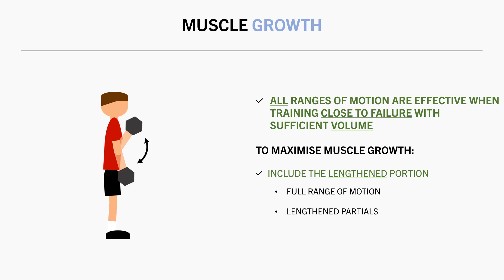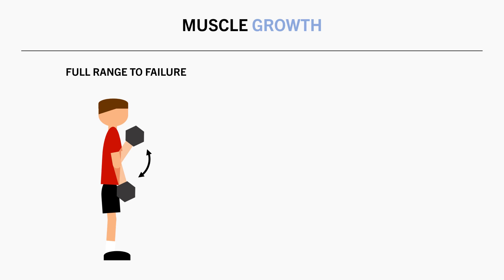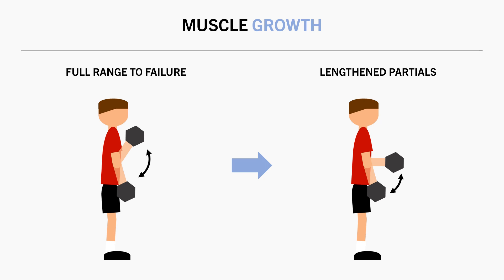You could also use lengthened partials as a strategy to extend sets in some cases. This can be achieved by performing a standard full range of motion to failure, and then performing a few extra lengthened partials where it is applicable. For example, after reaching failure during a set of bicep curls, you might be able to complete a few more partial reps through the lengthened range. But just be aware that this strategy doesn't work for all exercises.